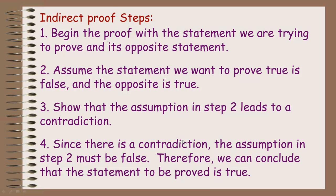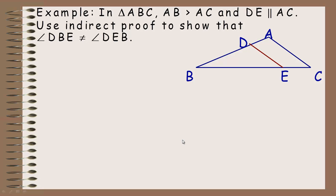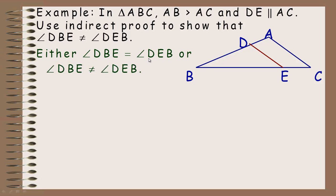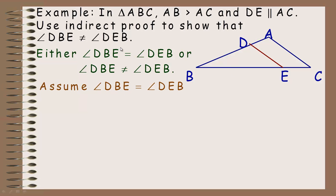Those are the basic steps to an indirect proof. In the first example, we're given that AB is greater than AC, and that DE and AC are parallel. We're asked to use an indirect proof to show that angle DBE is not equal to angle DEB. We start by listing all possibilities: either those two angles are equal or they're not equal. Since we want to prove they are not equal, we begin by assuming they are equal.